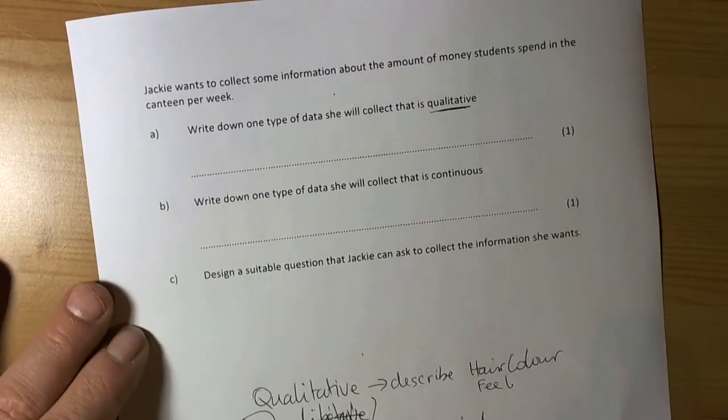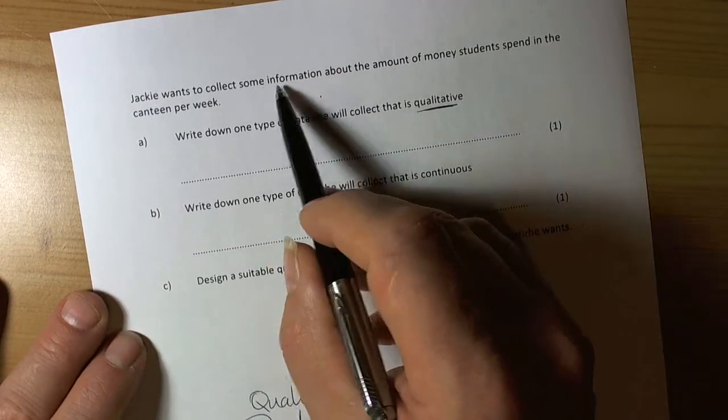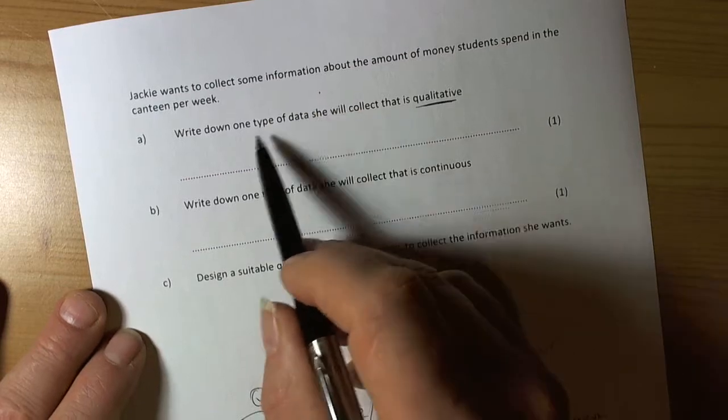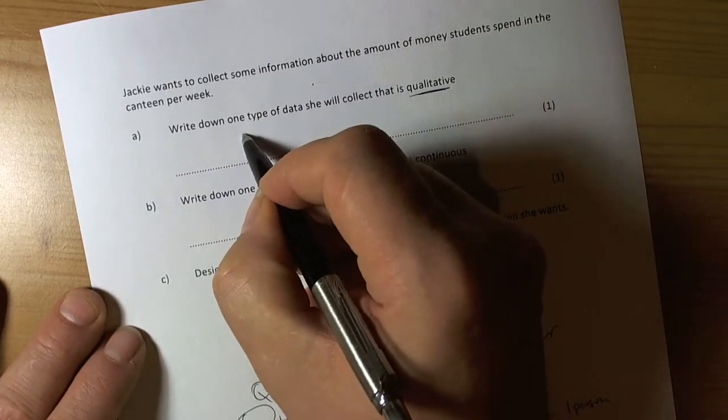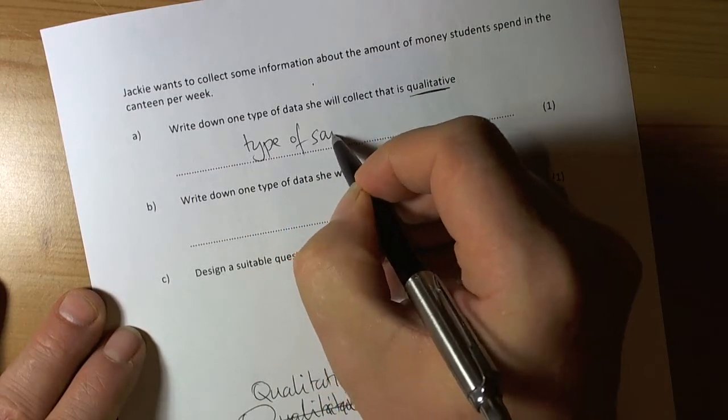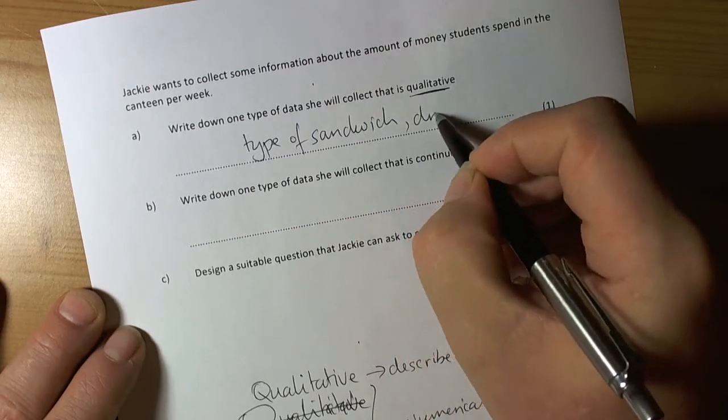Let's have a look at the question. It says write down one data type which is qualitative. She's talking about the amount of money students spend in a canteen, so it could be the type of sandwich that they buy or the drink flavour.